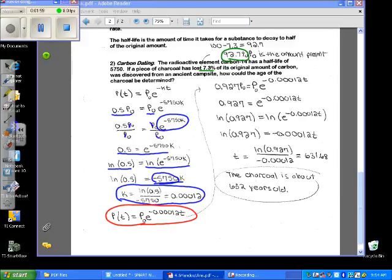It says how could the age of the charcoal be determined? So we're going to actually try to estimate the age. We know that it has 92.7% of its original amount, so we replace that with the amount that we have at the time. It's equal to our exponential function that we just found a second ago. And what we want to do is we want to solve for T. We want to solve for time to see how old it is.